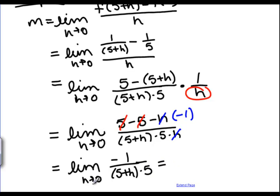Now I can let h become 0, so I get negative 1 over 5 plus 0 times 5, which is negative 1 over 25.